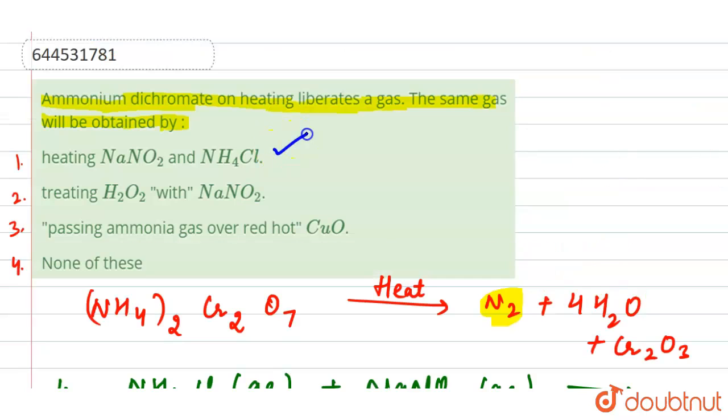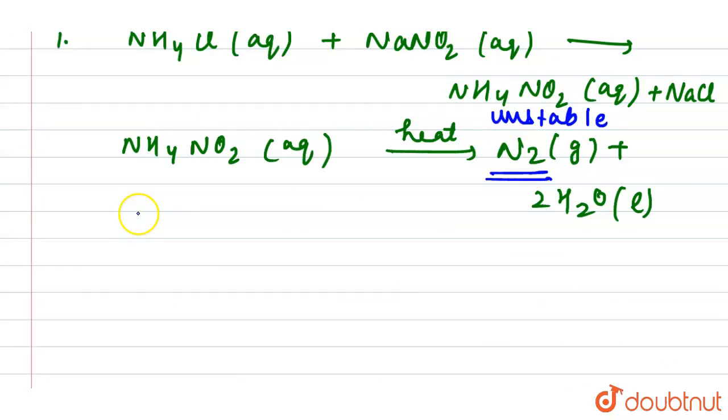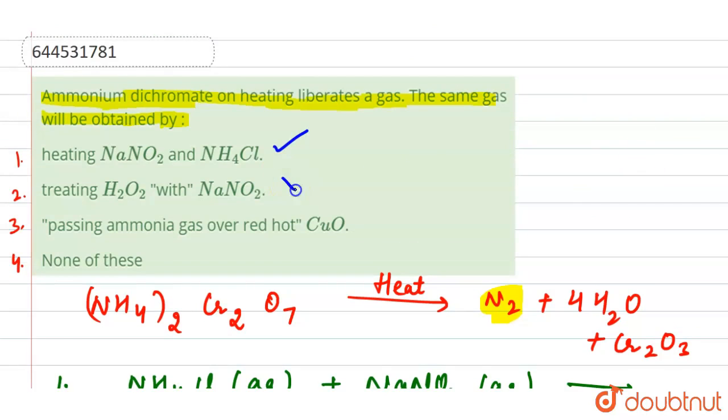Okay, so now next is treating H2O2 with NaNO2, then we have the formation of NaNO3 plus H2O. So here we don't have the N2, so it will not be correct.